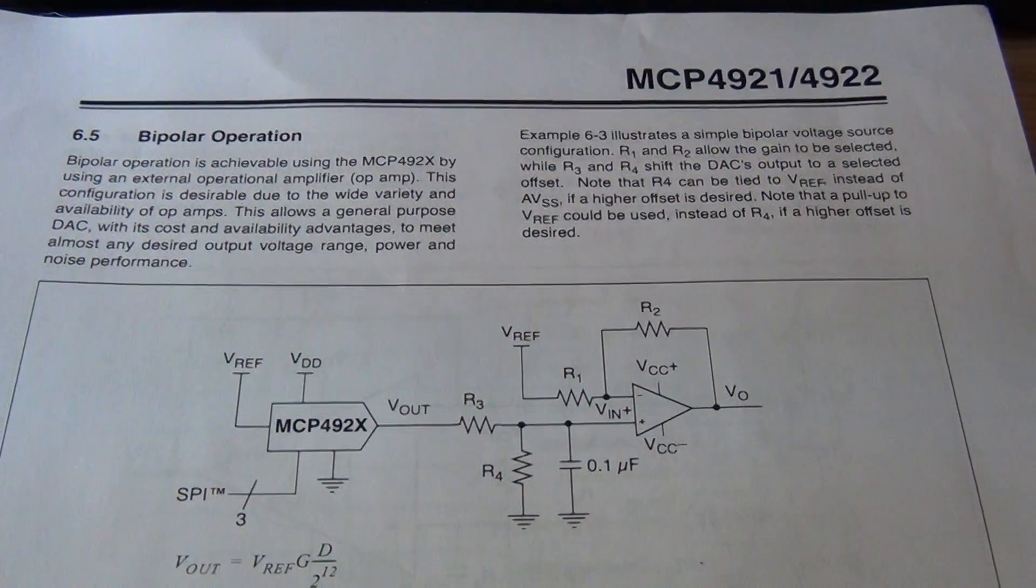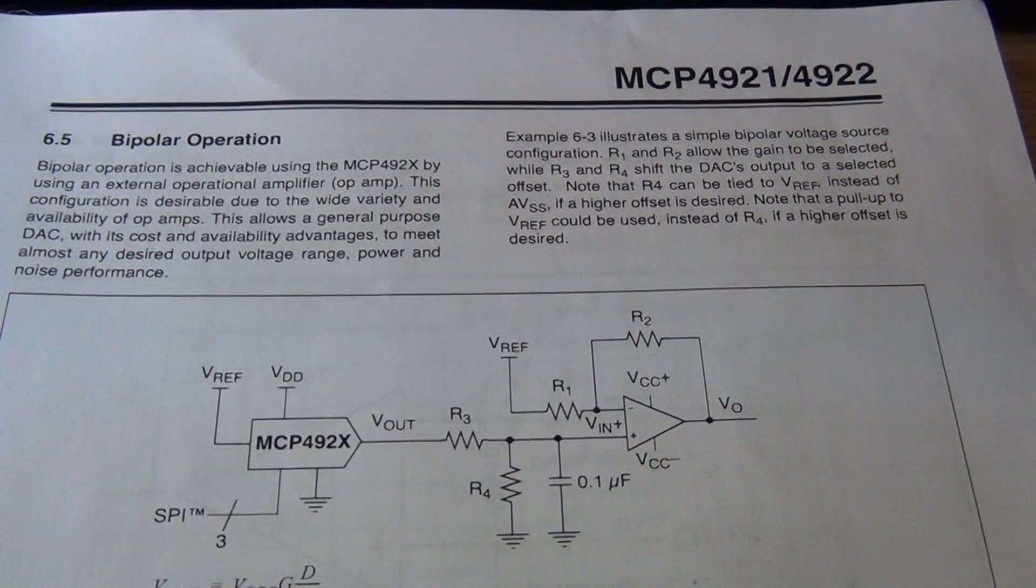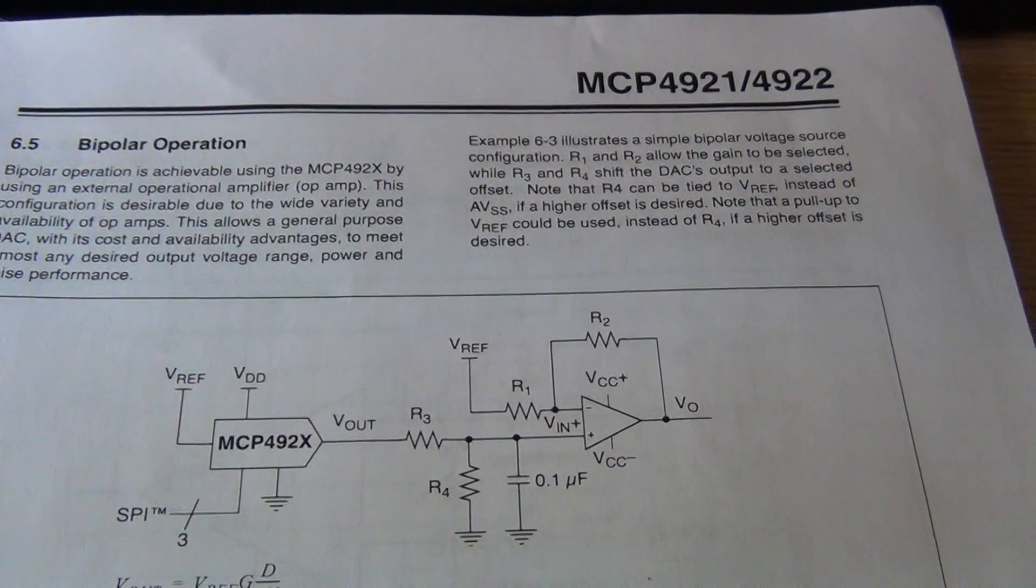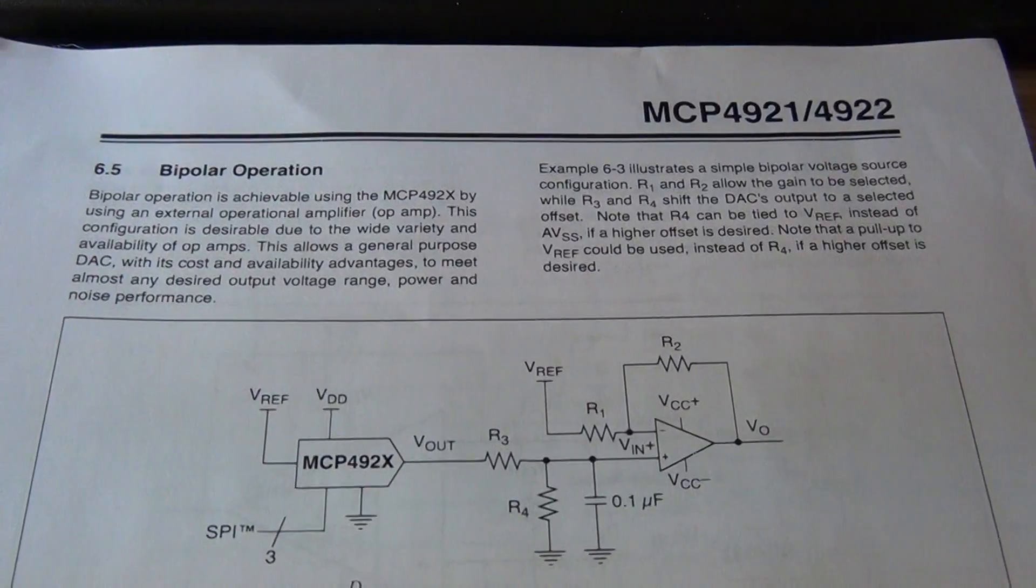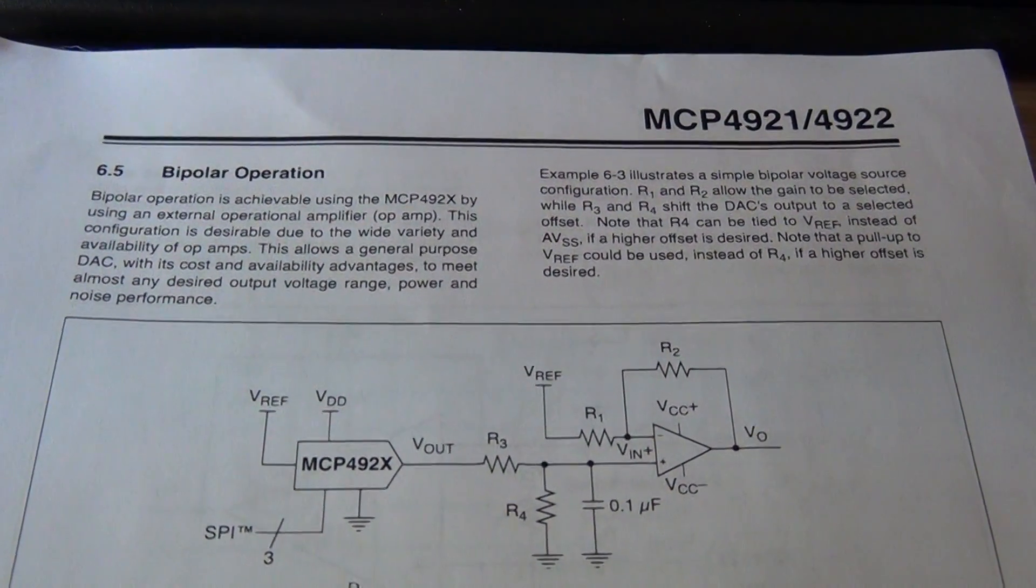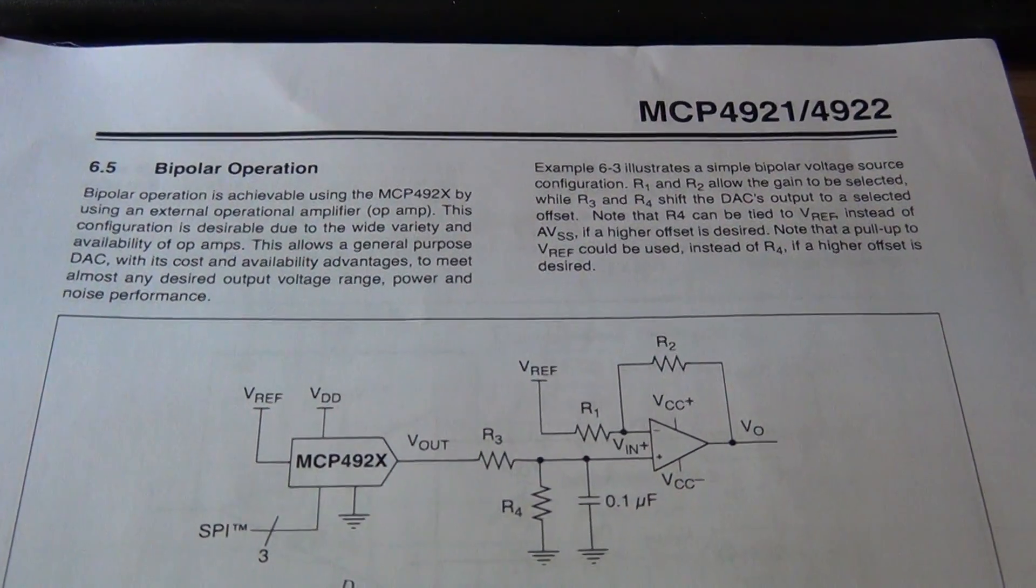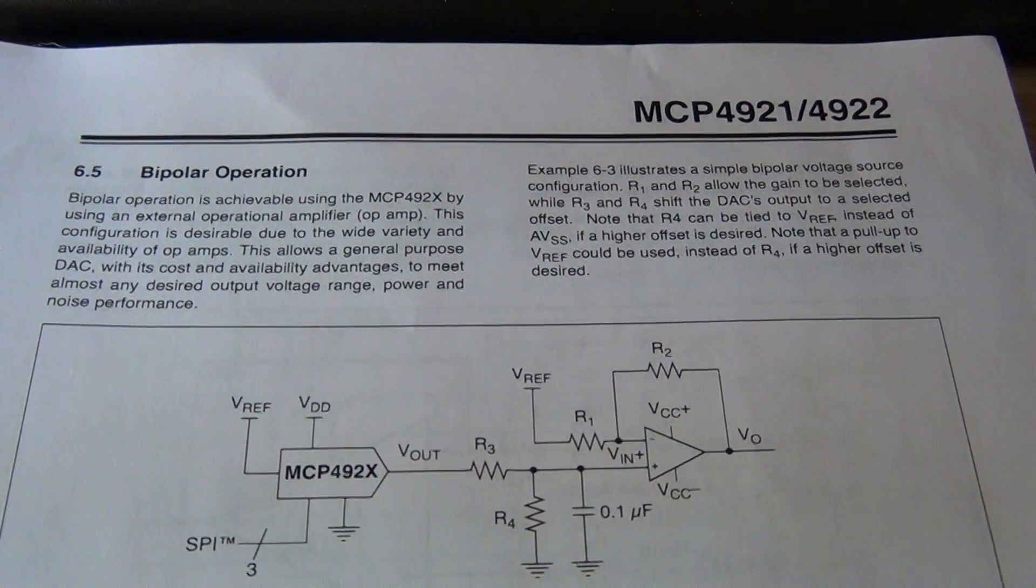In one of the previous videos we looked at the MCP4922 and found that it's good enough for our purposes. Now it's time to connect it to the operational amplifier so that we can drive a laser galvanometer using it.